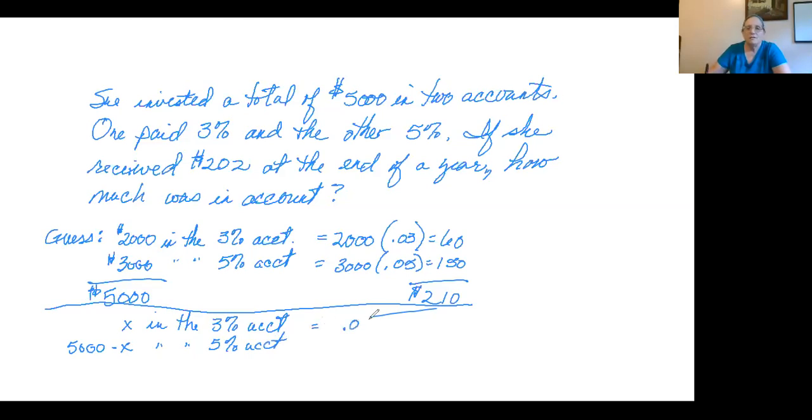That is how much is going to be in the 5% account. This means that the interest in the first account is 0.03 times X. The interest in the second account is 0.05 times 5,000 minus X. And we know that these are supposed to add up to $202. So 0.03X plus 0.05 times 5,000 minus X has to equal $202.